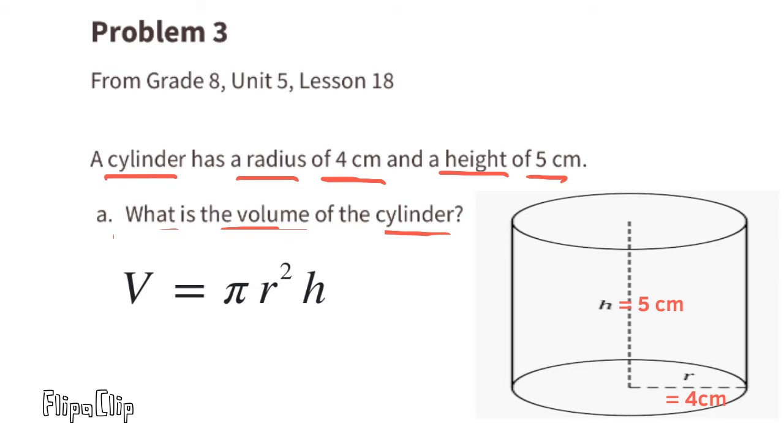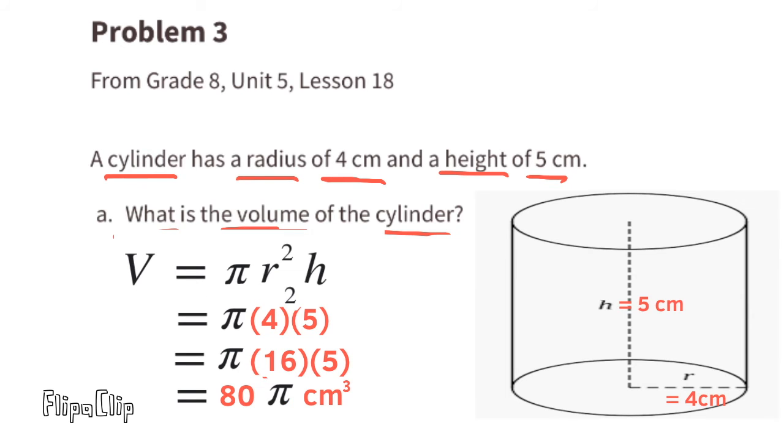We can substitute r with a 4 and substitute the h with a 5. The volume equals π times 4² times 5. We can rewrite this as volume equals π times 16 times 5.